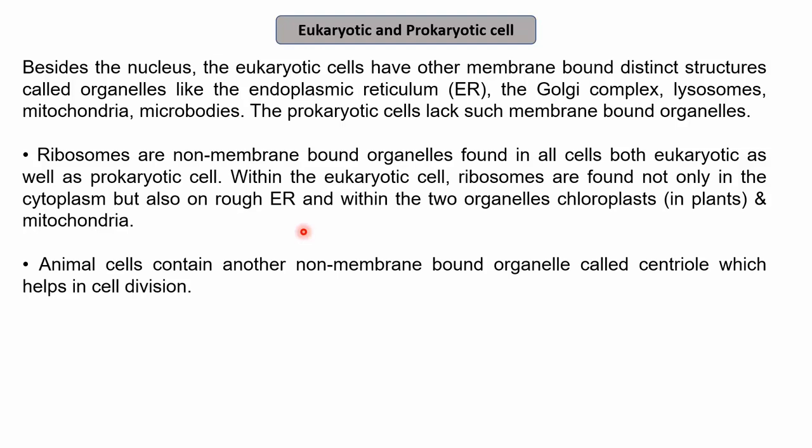Animal cells contain another non-membrane-bound organelle called the centriole, which helps in cell division. In animal cells, ribosomes and centrioles are the non-membrane-bound organelles; the rest have membranes. In prokaryotes, there are no membrane-bound organelles at all. A useful trick is 'NAMAC' — nucleus, mitochondria, and chloroplast — these three organelles are double membrane-bound, surrounded by a double membrane instead of a single membrane.